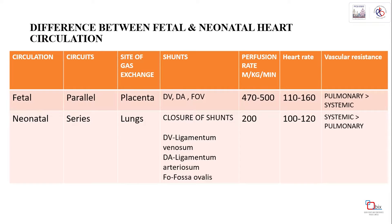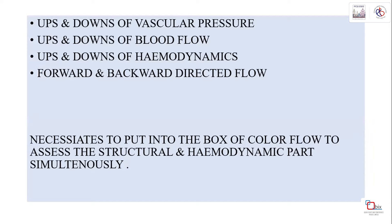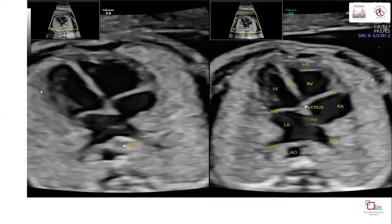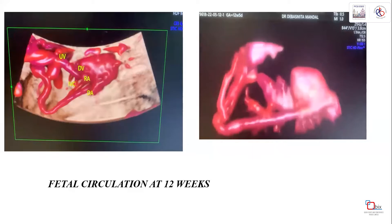The fetal circuit is parallel while the normal postnatal circuit is in series. There are differences in sites of gas exchange, perfusion rates, heart rates, and vascular resistance - with ups and downs in blood flow, hemodynamic parameters, and both forward and backward directed flow. All of these can be assessed using color flow Doppler to evaluate both structural and hemodynamic aspects in a lively, comprehensive manner.